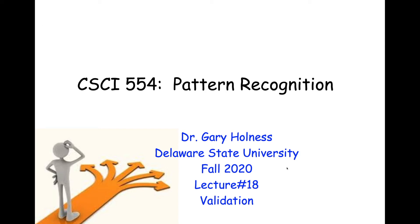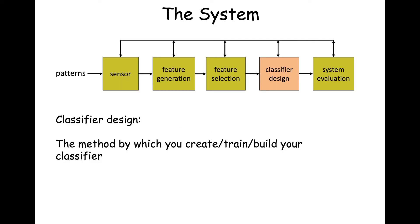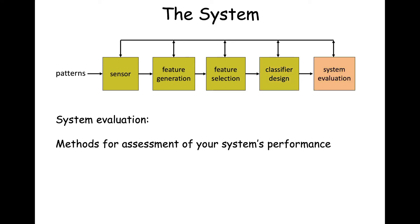Welcome back and happy Thursday. Today we're going to switch gears and talk about validation. Up to this point, we've been talking about classifier design — methods like Bayesian networks, probabilistic classifiers, decision trees, and K nearest neighbor. Now we'll switch to system evaluation, which are methods for assessment of the performance of your pattern recognition system.